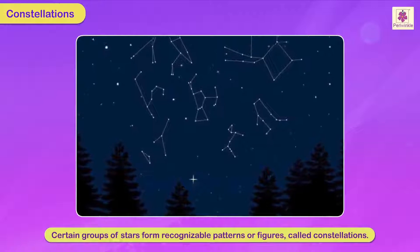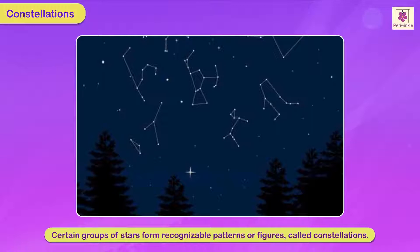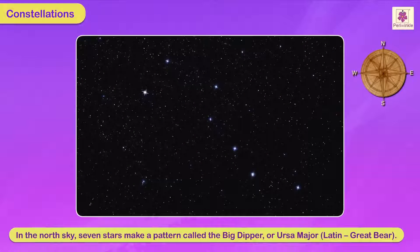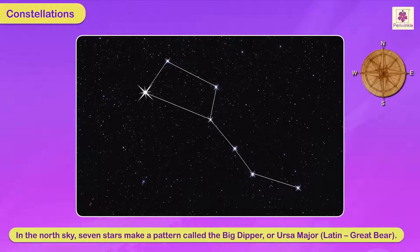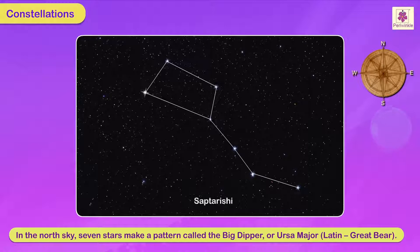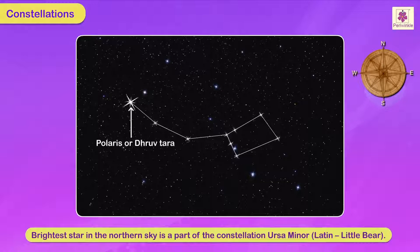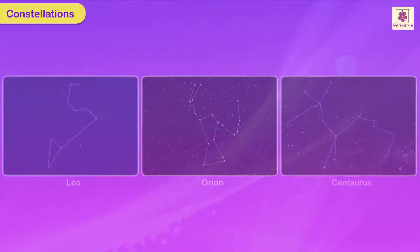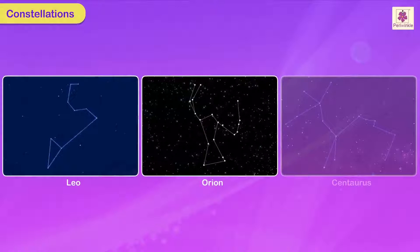Constellations: when seen from the Earth, there are certain groups of stars forming recognizable patterns or figures called constellations. If you look towards the north sky on a clear night, you can see seven stars making a pattern called the Big Dipper or Ursa Major, Latin for Great Bear. This is also called the Sapt Rishi. The brightest star in the northern sky, Polaris or Dhruvatara, is part of the constellation Ursa Minor, Latin for Little Bear. Some other constellations are Leo, Orion, and Centaurus.